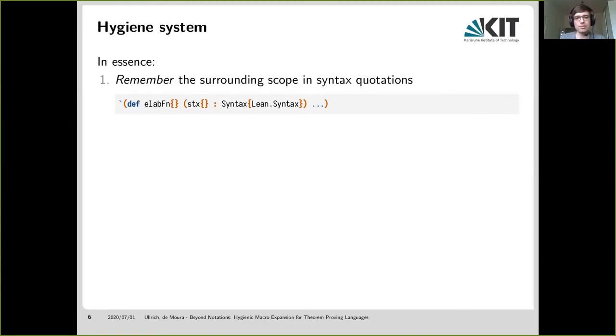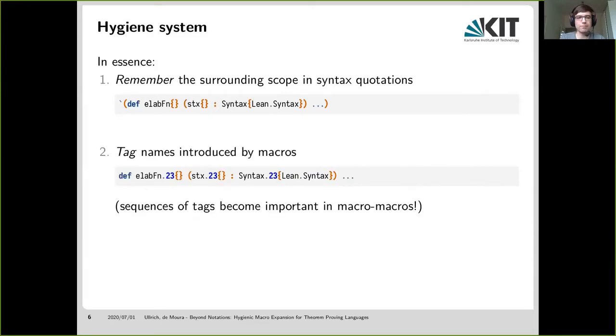So we see the identifiers elab-fn and stx do not match anything in the outside scope. But for syntax, we do seem to have a matching declaration from some namespace. So we remember the full name of that declaration, lean.syntax, inside these curly braces inside the syntax tree. And then the second step is that when we execute the syntax quotation, when we evaluate it, we tag names introduced by this quotation and by the eventual macro. So when we run the example from above, we may get something like, oh, now all the identifiers from inside the syntax quotation are suffixed with a dot 23.